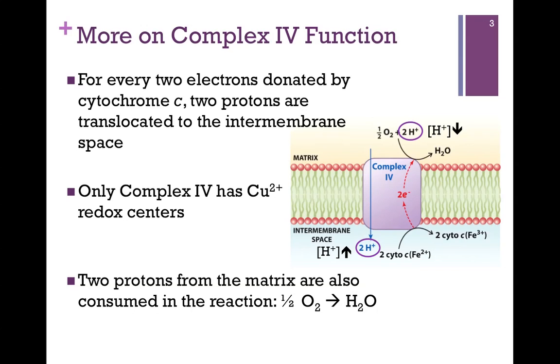So, the oxidized Copper 2 becomes reduced to Copper 1. Not only are we accumulating protons on the intermembrane space side because of the pumping through Complex 4, we're also decreasing the concentration of protons on the matrix side because we're going to use some of those protons in the process of reducing oxygen to water.